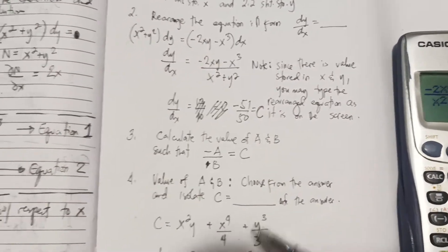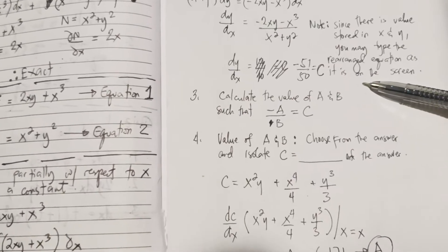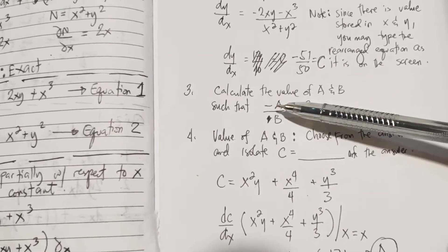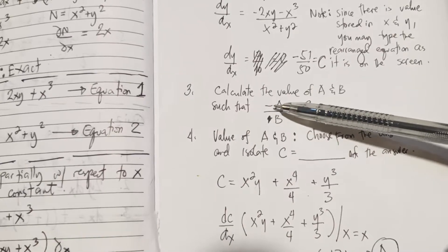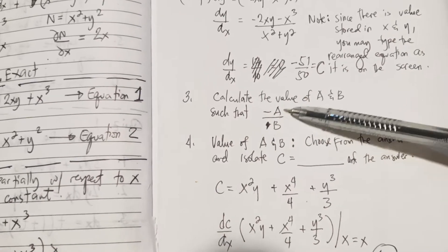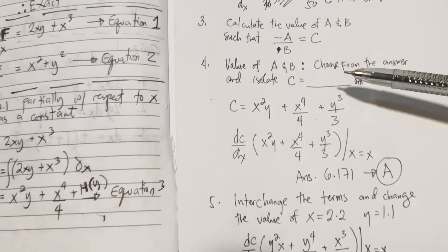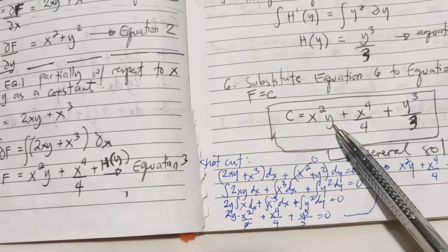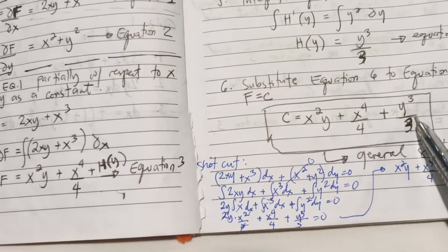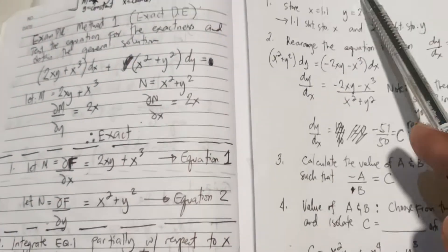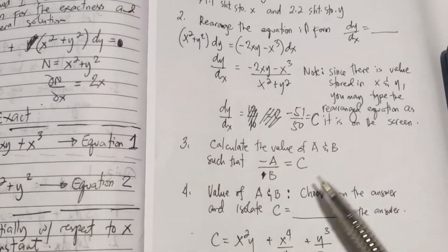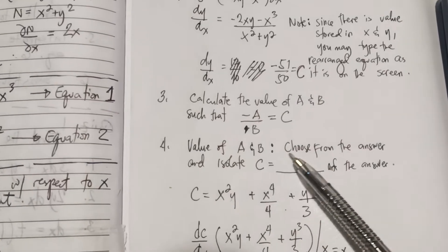The next step is to calculate the value of a and b. We need to get the ratio negative a over b. This should be equal to c so that we can confirm that c = x²y + x⁴/4 + y³/3 is the solution of this differential equation.